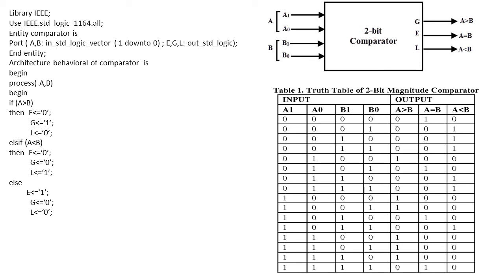These are the three terms which you can write for greater than, less than, and equal. Now we write the statement as end if. We end the process because we initialized the statement as process. So we put that value as end process, and finally we write end architecture.